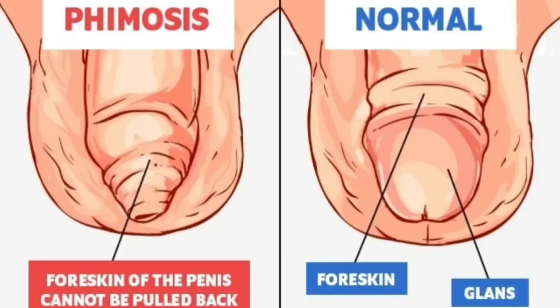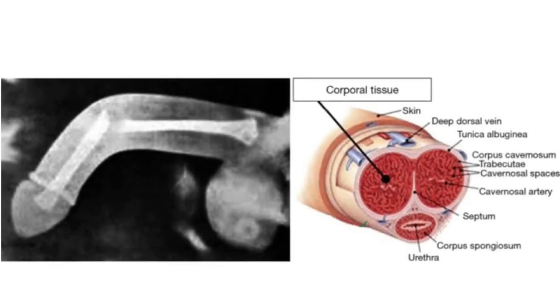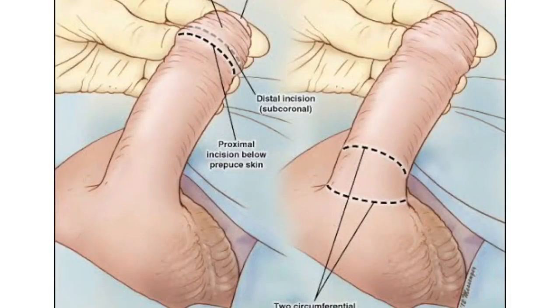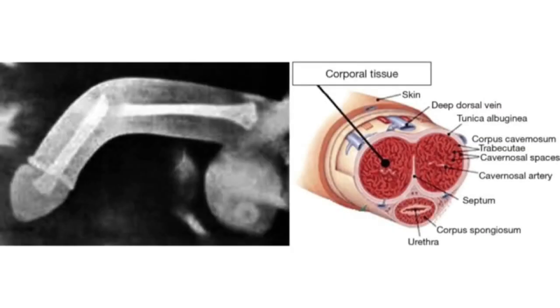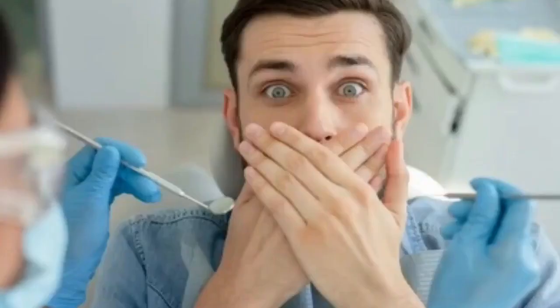The next clinical implication is phimosis, which occurs when the foreskin covering the head of the p structure is too tight and cannot be retracted, making it impossible to see the glans. This can cause infection and difficulty urinating. The last clinical correlate is penile trauma or fracture. Although the p structure has no bones, the lining of the p structure can get torn when it is erect. When this happens, the person will hear a popping sound — sometimes called a penile fracture — and the p structure will become flaccid, bruised, and swollen.